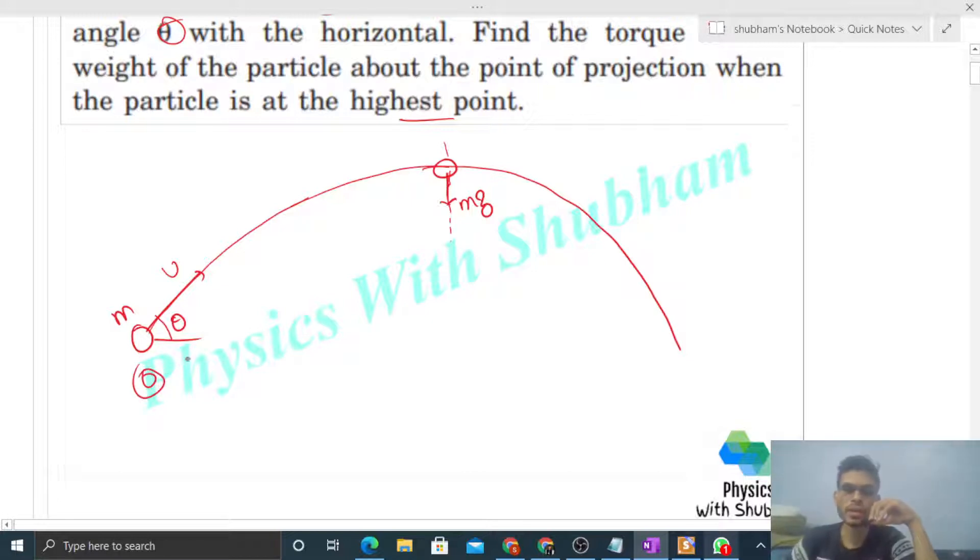What is torque? Torque is a vector quantity given by τ = r × F. For any vector quantity, you need to specify both magnitude and direction. First, let's discuss magnitude. The magnitude of torque is |r| × |F| × sin α.